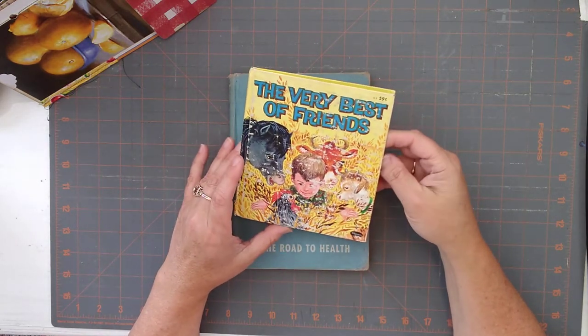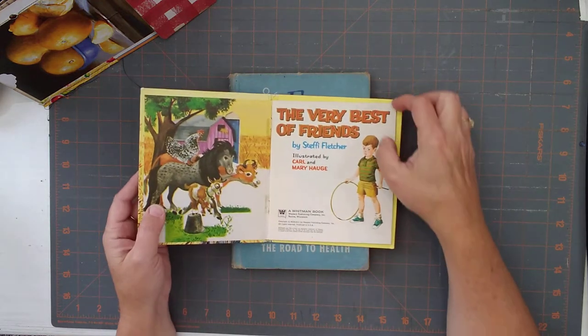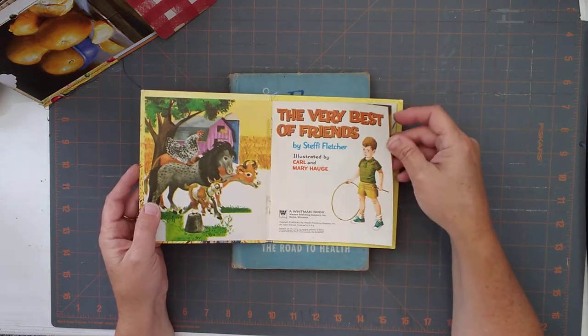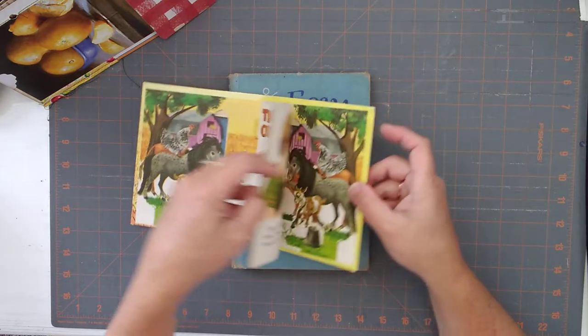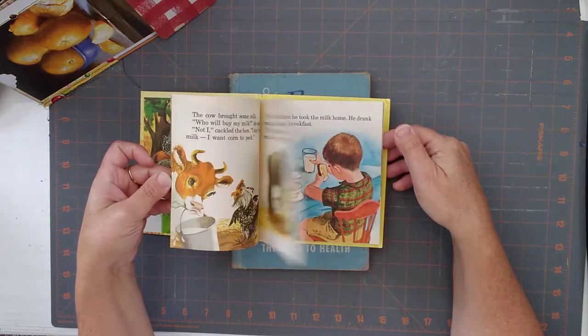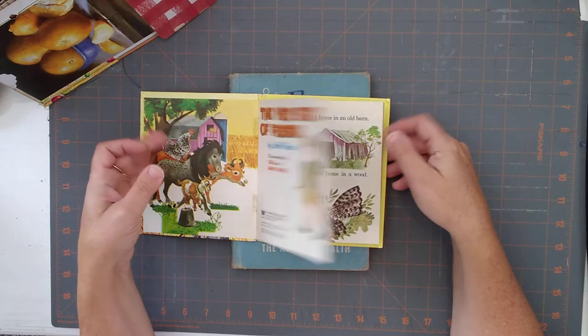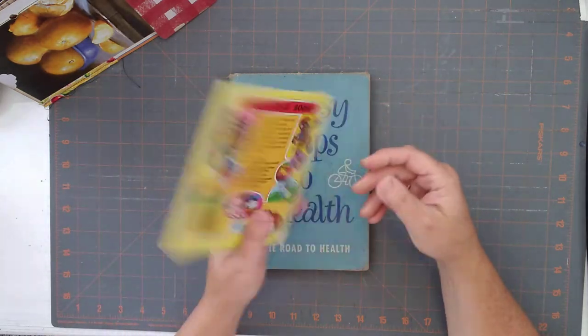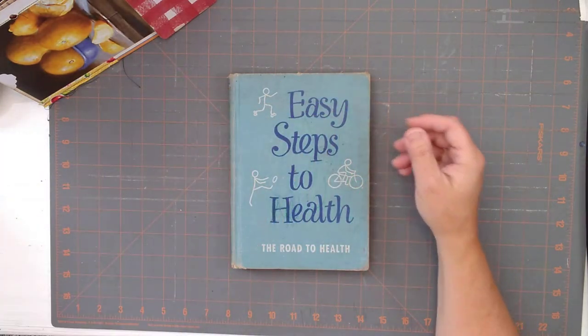So, the very best of friends. This is a Whitman book. Again, Roman numerals. Really cool. Really neat book. So this looked really cool. I thought I'd get that for sure.